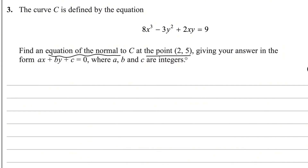First of all, you need to find the gradient of the tangent at this point. If you are able to find the gradient of the tangent, you can easily find the gradient of the normal and later find the equation of the normal. To find the gradient of the curve at point (2, 5), we differentiate this function with respect to x.